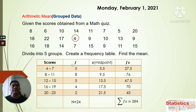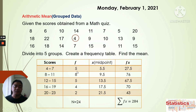The second column is the frequency. We tally how many scores fall in each range: there are 5 scores within 4 to 7, 8 scores within 8 to 11, 5 scores within 12 to 15, 4 scores within 16 to 19, and 2 scores within 20 to 23.